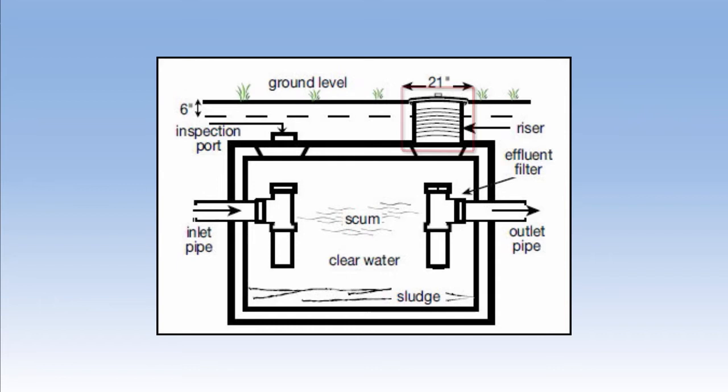At the top right, you can see a riser with the access port to pump the accumulated sludge out of the tank. This image shows a properly maintained tank with good proportions of water and sludge.